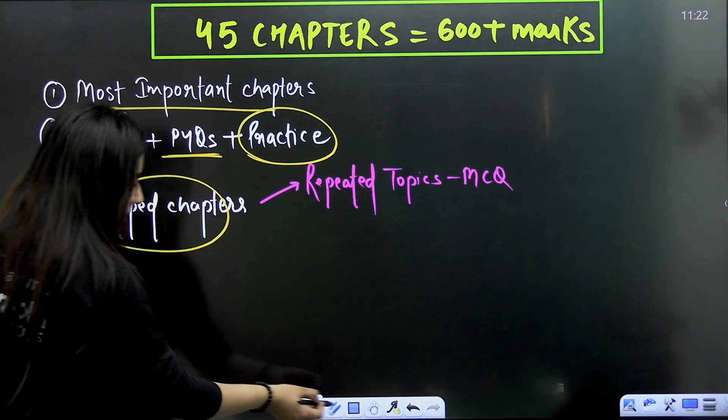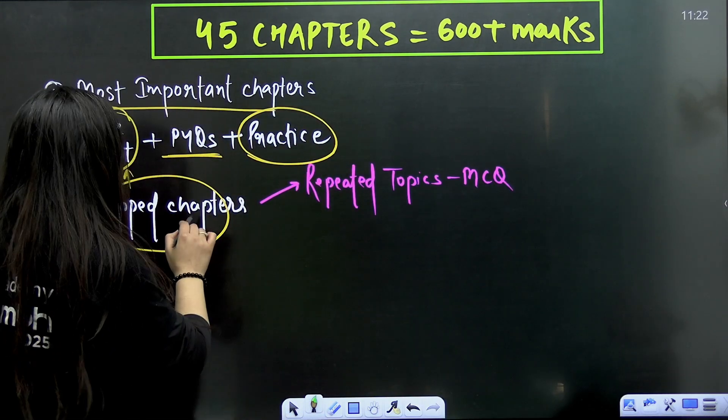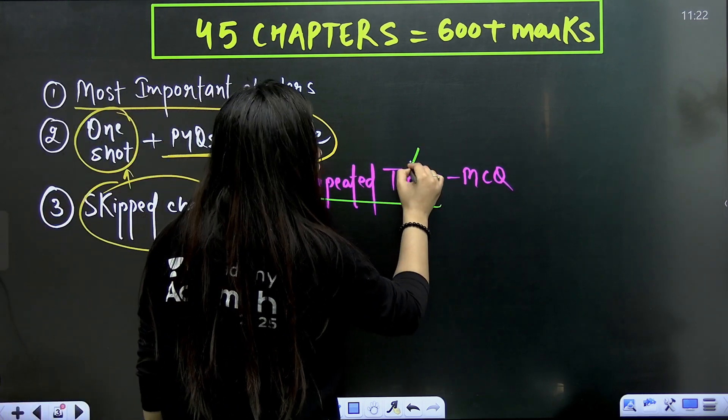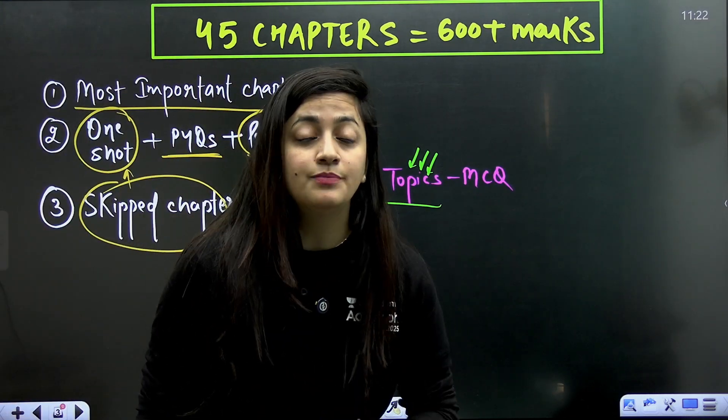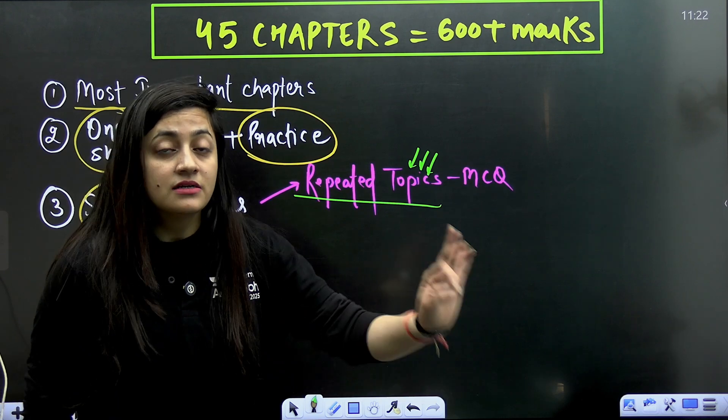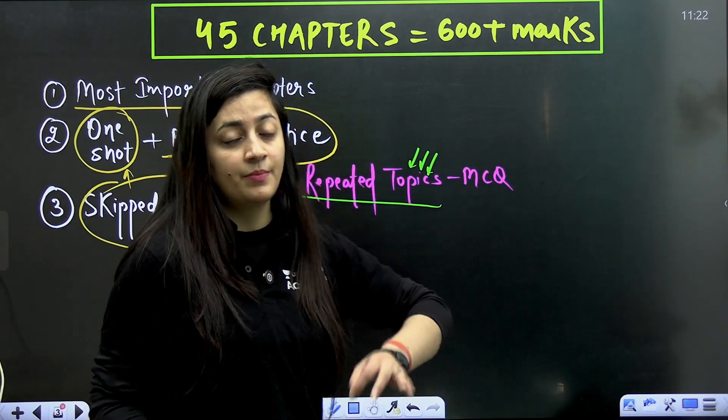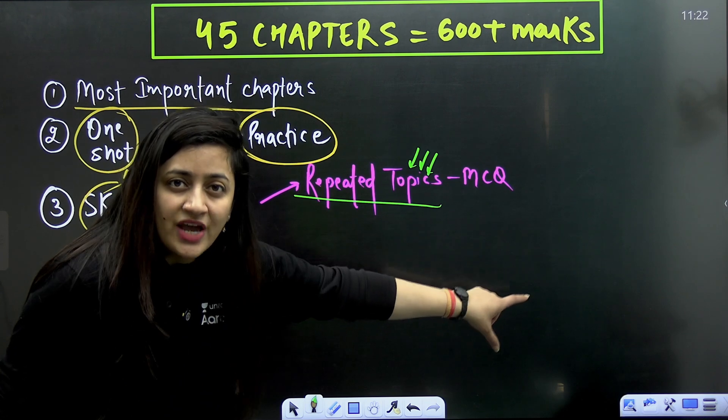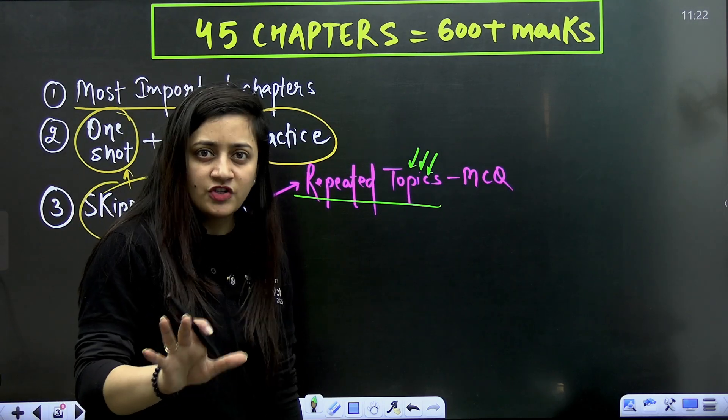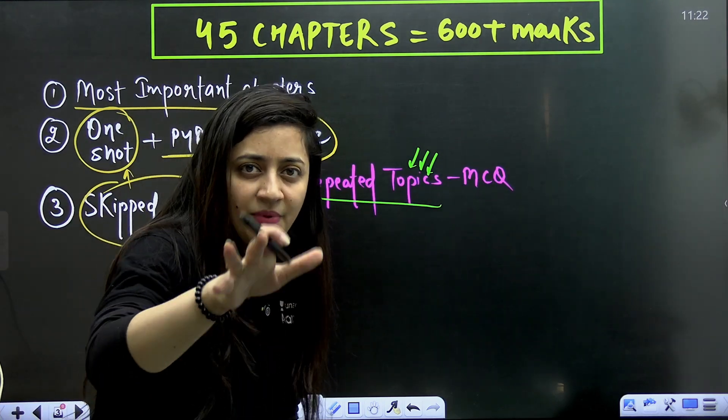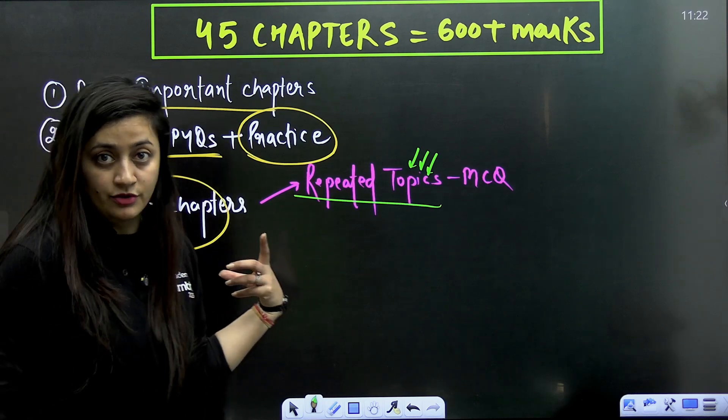Then whatever chapters you are going to skip, let's suppose if you have completed certain chapters which are not here in this particular list, from that do practice the repeated topics. Even if there are certain chapters from where a particular type of question is coming again and again in the paper, please focus on that particular topic. Check all its PYQs. Just give it a reading. And if by chance in paper you get a similar kind of question, you will be able to solve it. So this is the smart work that you have to do.